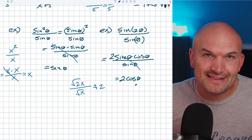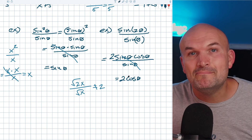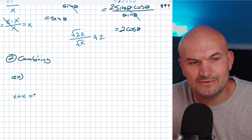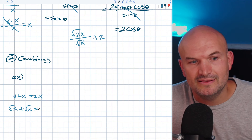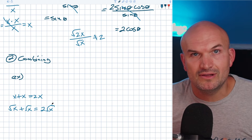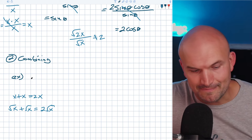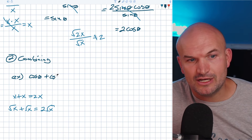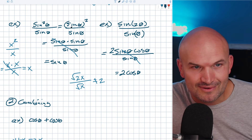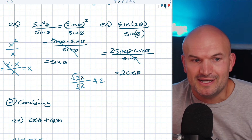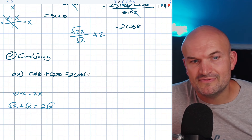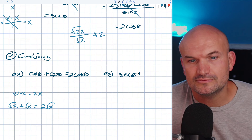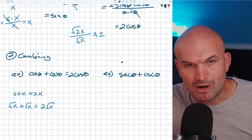The next topic is combining functions. Combining only works when we have like terms - the functions must be exactly the same. Just like x plus x equals two x, or square root of x plus square root of x equals two square root of x, cosine of theta plus cosine of theta equals two cosine of theta. Don't make it cosine squared - that's multiplication. But if you have secant of theta plus cosecant of theta, you can't combine them - that's like having x plus y.